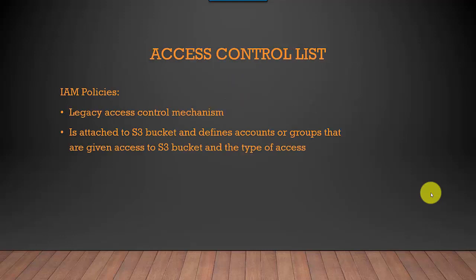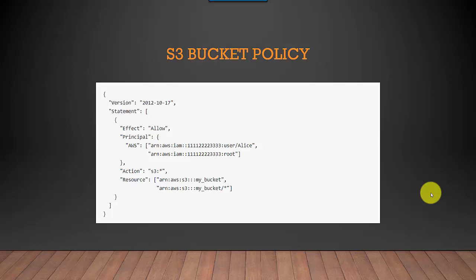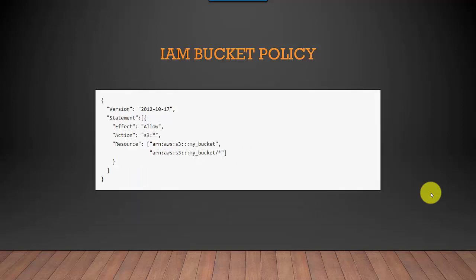Access control lists are a legacy access control mechanism. AWS currently recommends using IAM policies instead, but if you've already defined ACLs and they work fine, just keep using them. An ACL is attached to an S3 bucket and defines accounts or groups that are given access and the type of access. In a sample S3 bucket policy you can see the principal is defined — for example, Alice and root need access to the bucket — whereas in an IAM policy there is no principal, because you attach the policy directly to the principal.